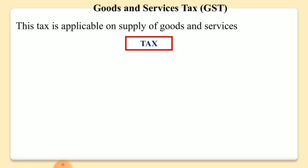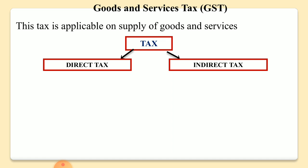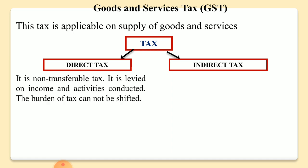Tax is the revenue that government utilizes for public welfare. We have different types of taxes: direct tax and indirect tax. Direct taxes are non-transferable taxes, meaning the burden of tax cannot be shifted from one person to another. The person who has earned that income, only that person will pay the tax. Examples include income tax, wealth tax, and gift tax — all these are direct taxes.